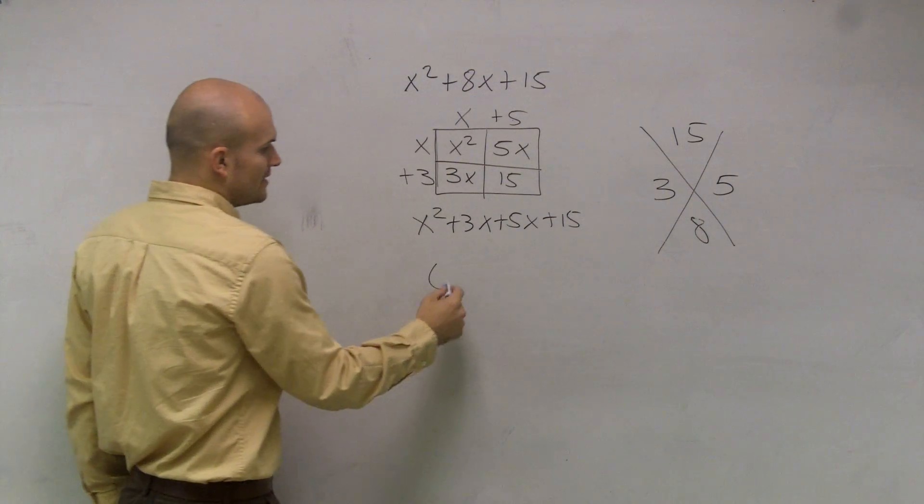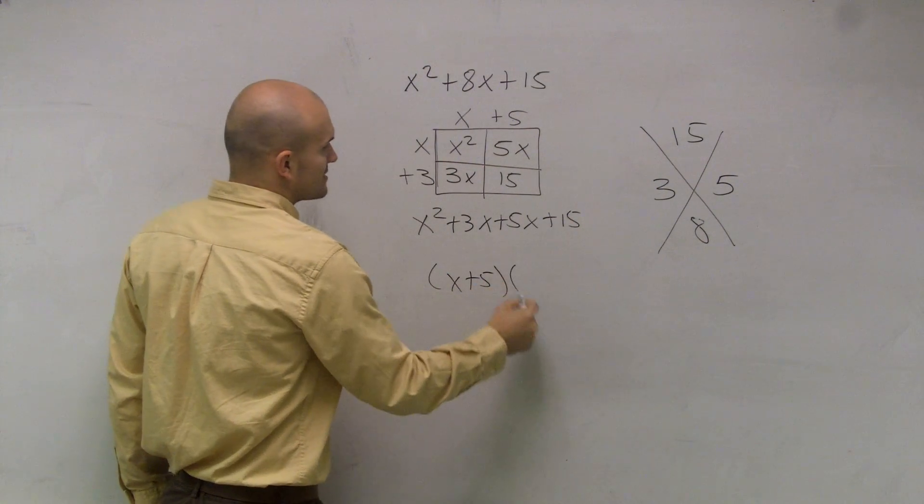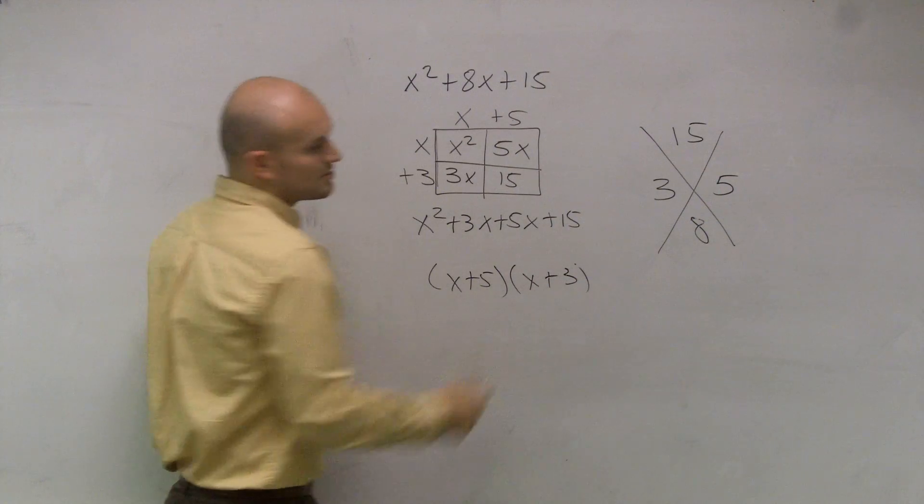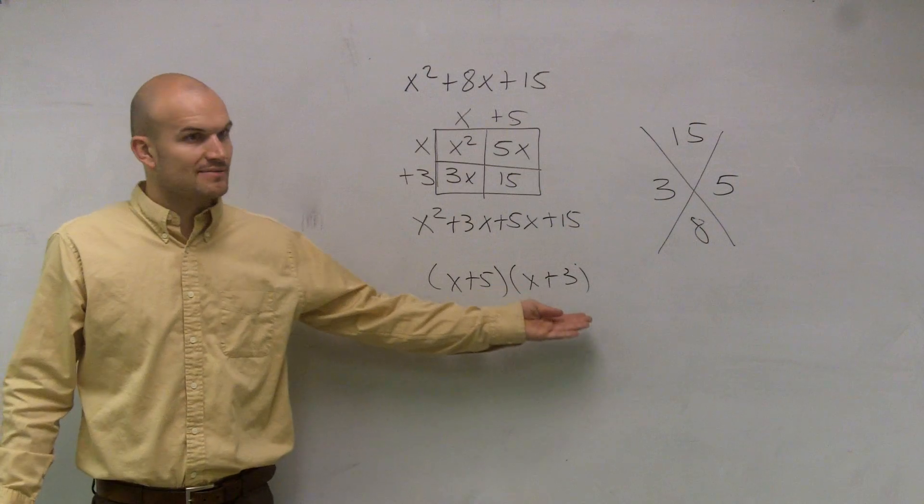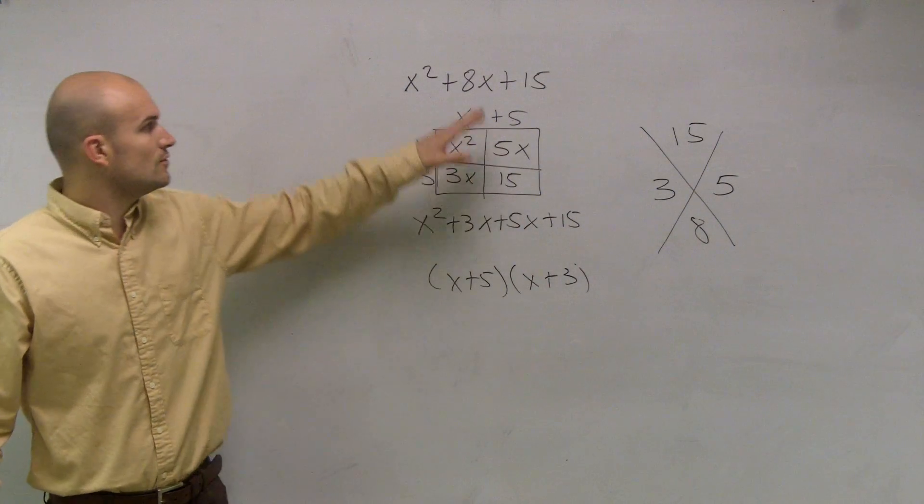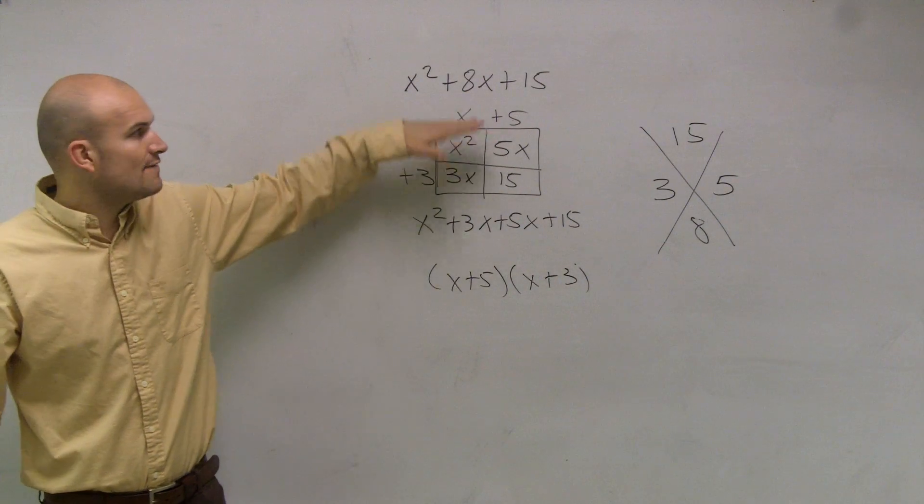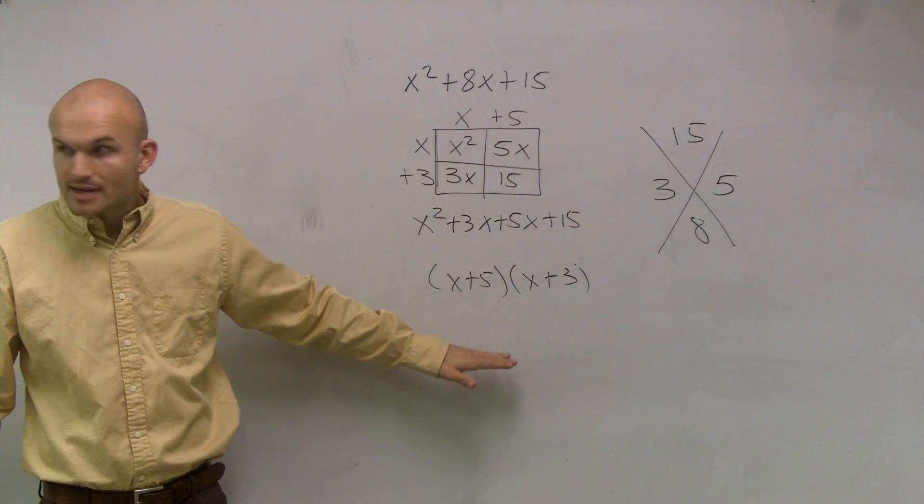All right. So therefore, now what I've just created is X plus 5 times X plus 3. And remember, so now I've taken an expression times an expression, multiply these two, gives me this trinomial. So now have I rewritten this as a product? Yes.